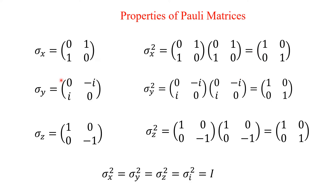Similarly, Sigma Y squared: multiplying (0,-i; i,0) times (0,-i; i,0). Here i times i gives i² = -1, so minus of minus 1 gives plus 1 in the diagonal entries. Similarly for Sigma Z squared. In principle, the square of the Pauli matrices equals the unit matrix — that is, Sigma X² = Sigma Y² = Sigma Z² = Sigma_i² equals the 2×2 unit matrix, where i indicates X, Y, Z.